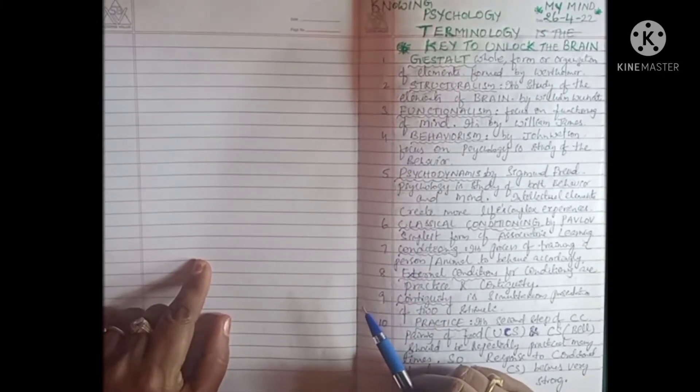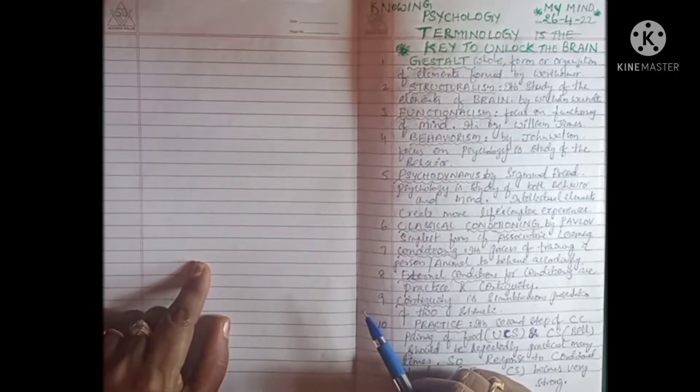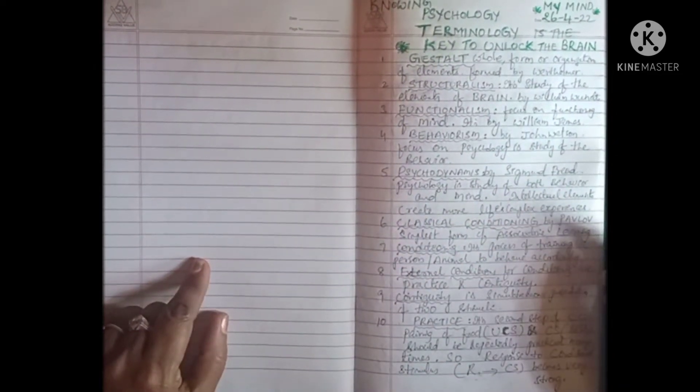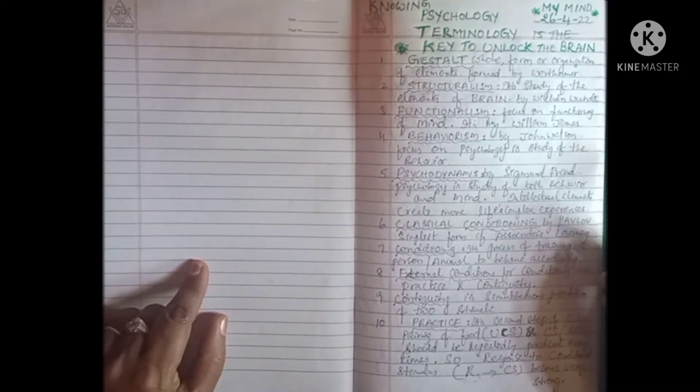Good morning everyone. Let's learn about a few terms in psychology. Gestalt means whole, form or organization of elements. It is formed by Wertheimer.